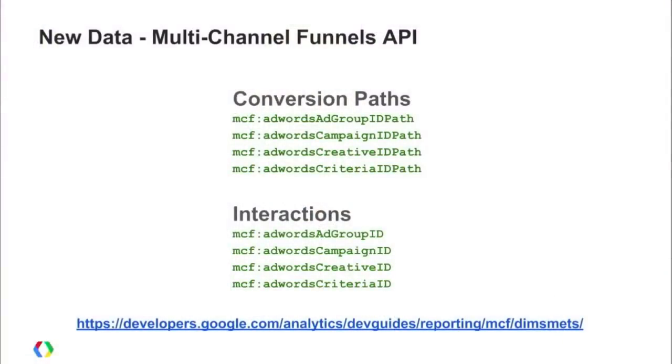Moving on to the APIs — just last week we announced three different changes for the Multi-Channel Funnel API, Core Reporting API, and Management API. There's new data and a couple of new features. The first is Multi-Channel Funnels, where we added additional data around AdWords conversion paths and interactions.